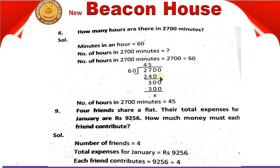If you divide 2700 by 60, the answer will be 45. So the number of hours in 2700 minutes equals 45.